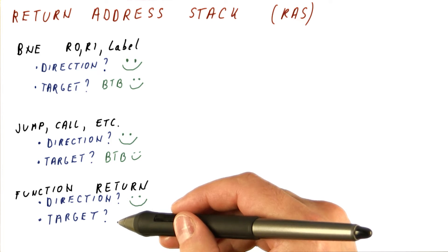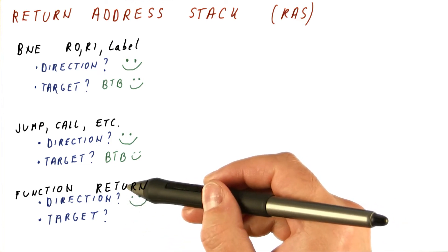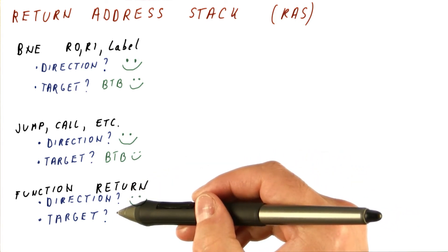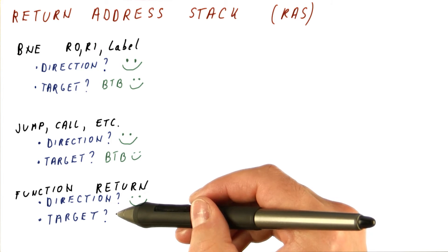But the target is often difficult to predict. If this function is always called from the same place, then the return will always jump back to the same location. And in that case, the BTB will do fine. But usually, we create a function so that it can be called from multiple places in the program.